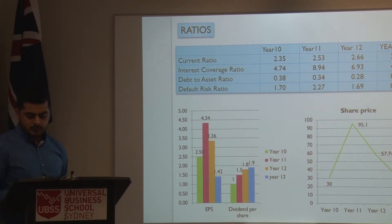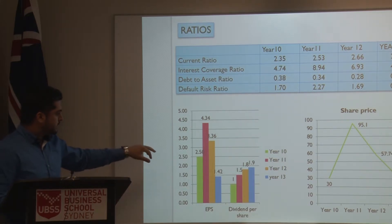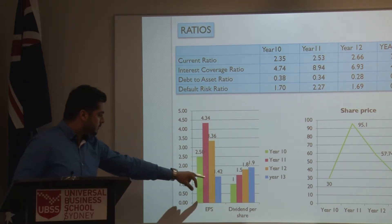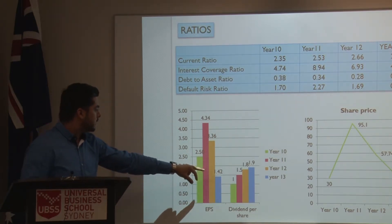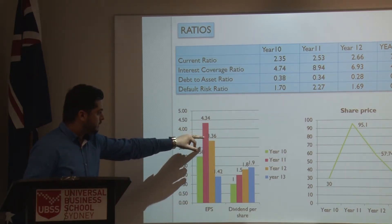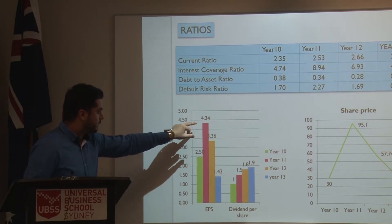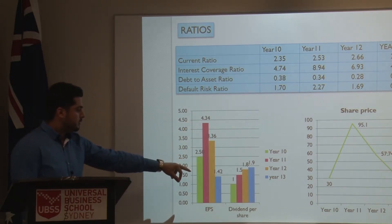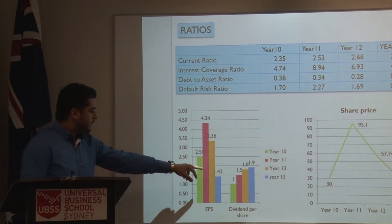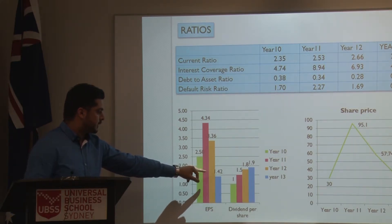As you can see, the earnings per share — the share price relative to earnings — was only about 1.42. In year 11 and year 12 we were in a very good position. But in year 13 we lost revenue, and that's why we lost share price.